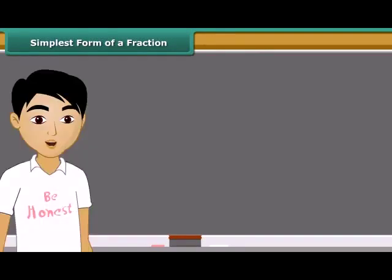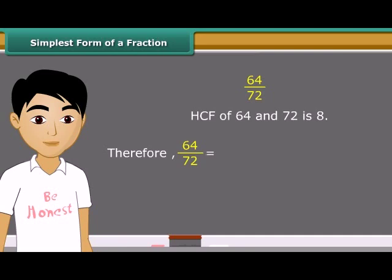Students, second method to find the equivalent fraction in the simplest form is to find the HCF of the numerator and denominator and then divide both of them by the HCF. Consider fractions 64 upon 72. The HCF of 64 and 72 is 8. We get new fraction 8 upon 9 on dividing the numerator and denominator both by HCF.